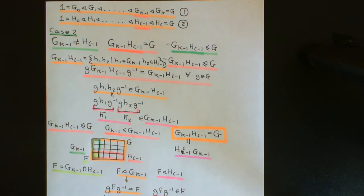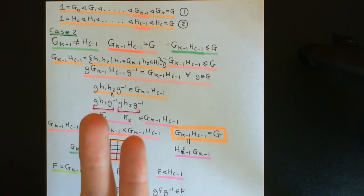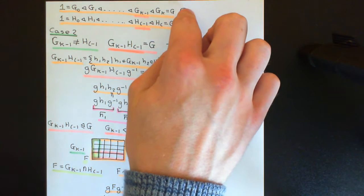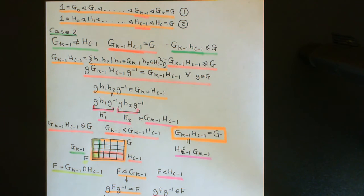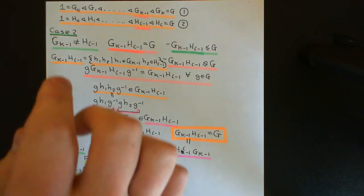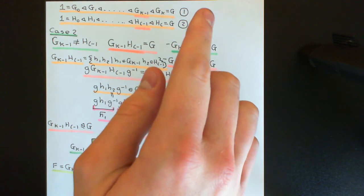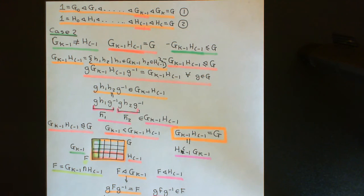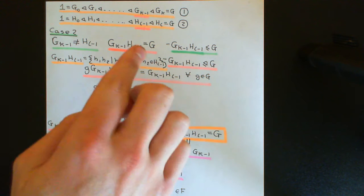Let me spell out our strategy. What we're going to do is create two more composition series for group G: one will be related to composition series number one and the other will be related to composition series number two. It will then be easy to say that composition series number one and the one we built related to it obey part two of the Jordan-Hölder theorem — they'll have the same length and their composition factors will correspond. Likewise for composition series number two.